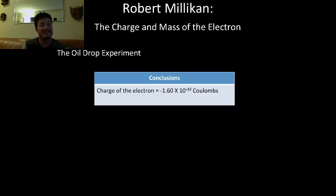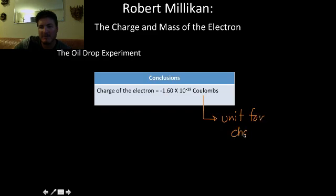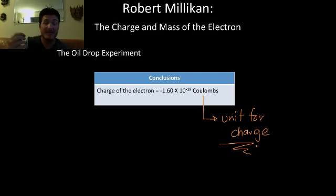So what he was able to conclude is that the charge of the electron is actually negative 1.60 times 10 to the negative 19 coulombs. Now, any time you guys see a number that says times 10 to the negative 19, that is an extremely small number. The charge of the electron is very, very small. Now, coulombs, that's a unit for charge. And those are Millikan's findings. I hope that's helpful. A little bit complicated. If you have any questions, ask me in class and we can talk about it again.